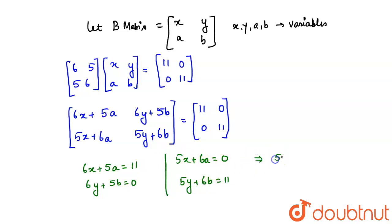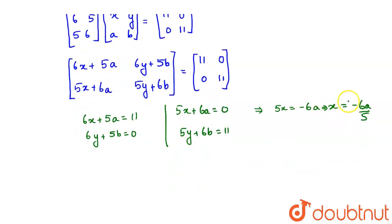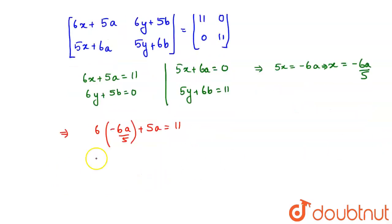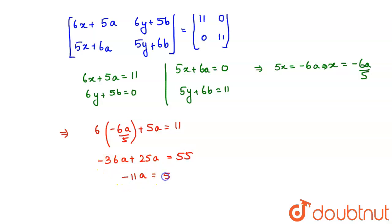From the equation 5x + 6a = 0, we get x = −6a/5. Substituting into 6x + 5a = 11 gives 6(−6a/5) + 5a = 11, which simplifies to (−36a + 25a)/5 = 11, so −11a = 55, giving a = −5.